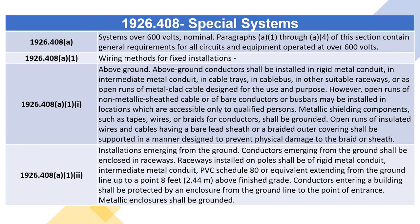Metallic shielding components, such as tapes, wires, or braids for conductors, shall be grounded. Open runs of insulated wires and cables having a bare lead sheath or a braided outer covering shall be supported in a manner designed to prevent physical damage to the braid or sheath.